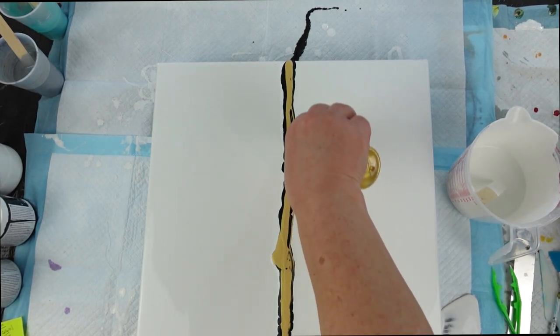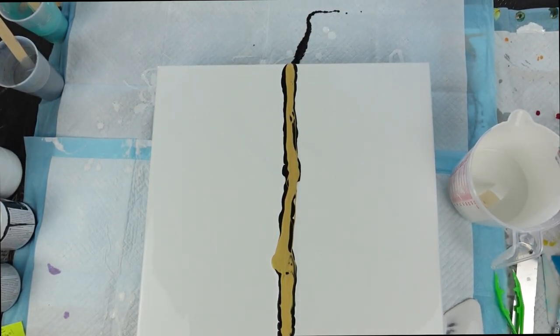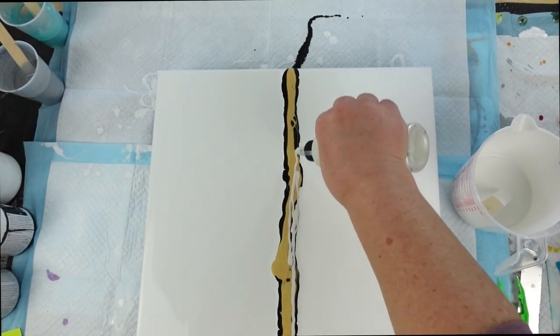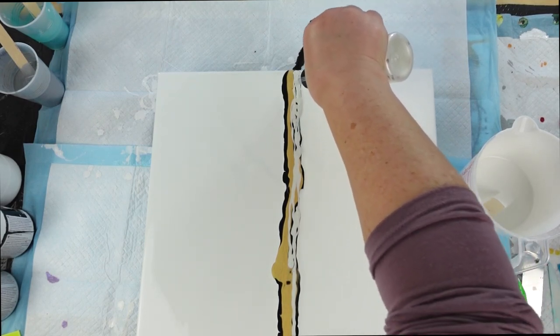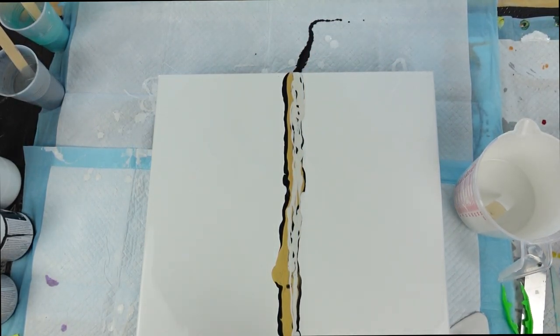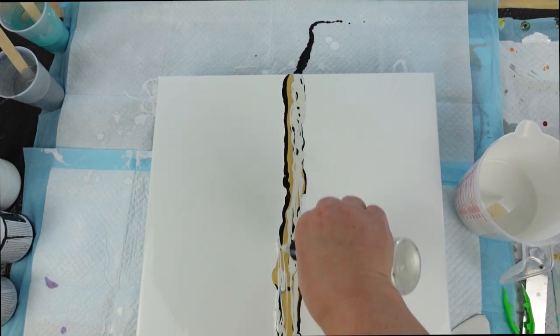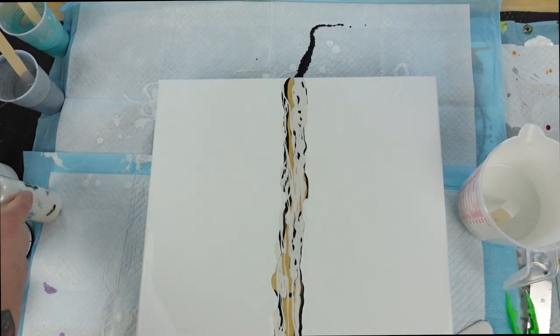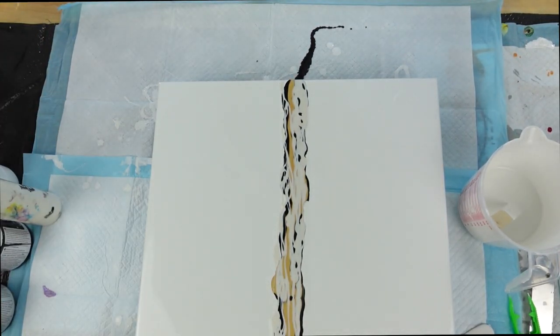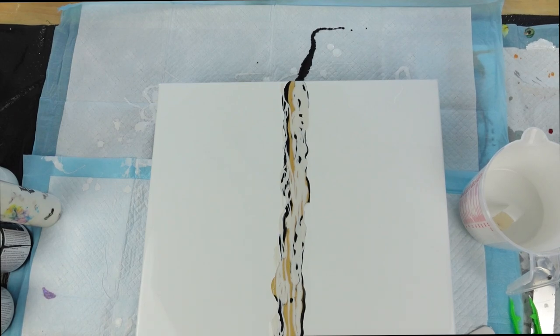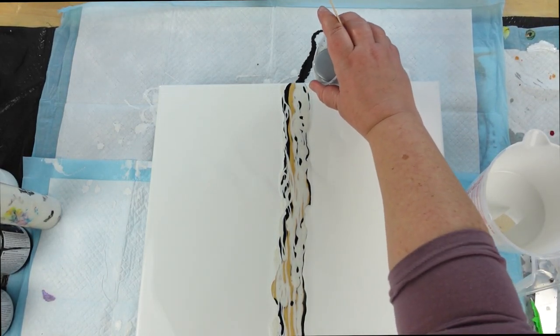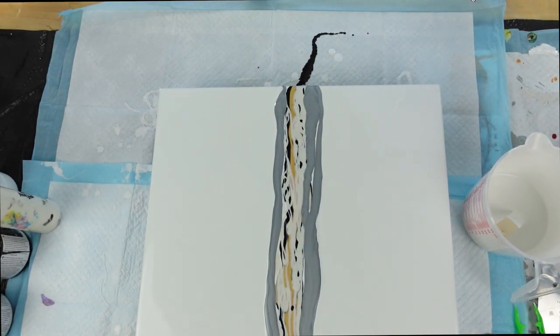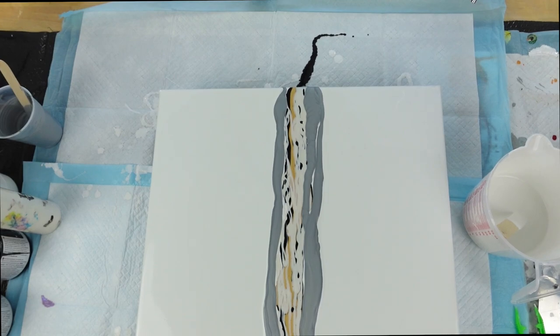And then I'm going to come in with the silver. It's kind of thick, and come along the sides again. It's a lot of silver, but that's okay. I want it to read. I want the silver to be read well.